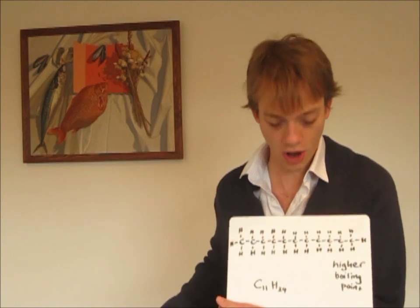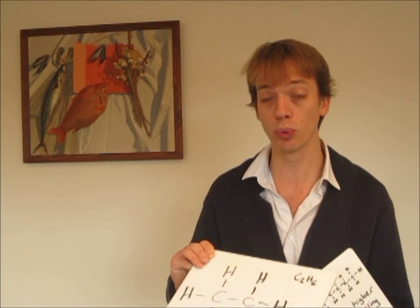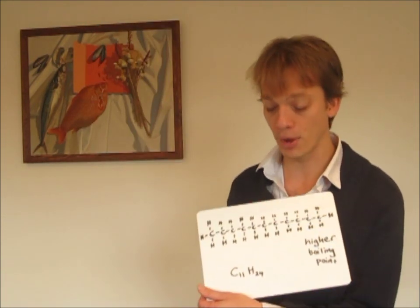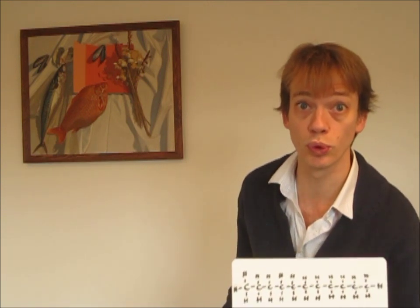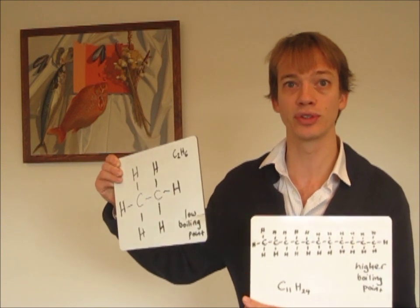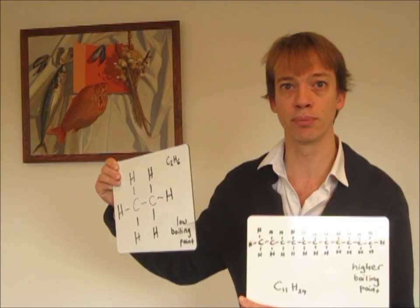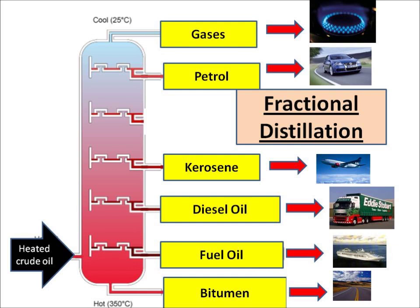Then there's a longer chain hydrocarbon with 11 carbon atoms, and that's got a higher boiling point. So if we heat up the mixture in the fractionating tower, the short chain molecule with a low boiling point goes to the top, while the longer chain molecule with a higher boiling point goes lower down the column towards the bottom. That's how fractional distillation works. When we heat crude oil it's separated into six different groups called fractions: gases, petrol, kerosene, diesel, fuel oil, and bitumen.